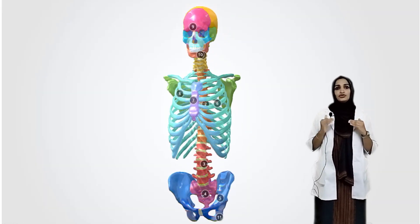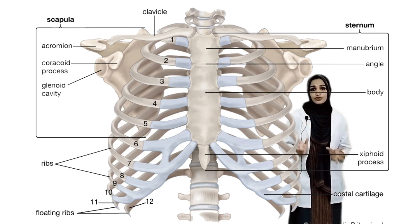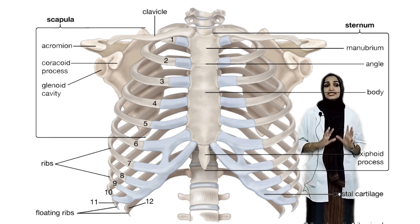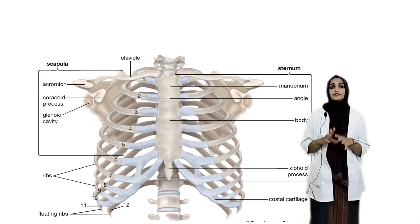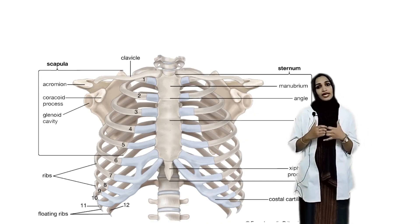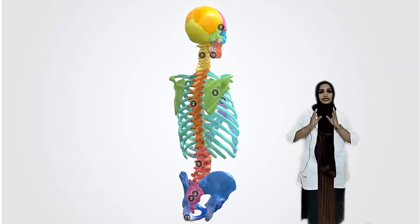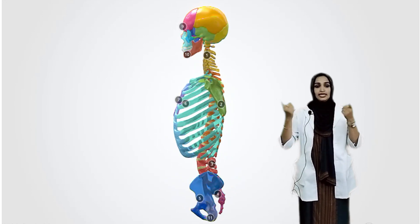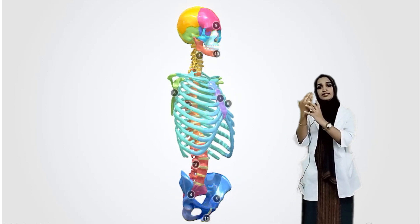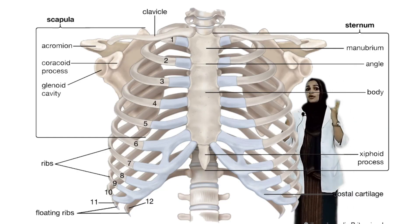Coming to the thoracic cavity. The thoracic cavity includes different types of bones. First, it consists of the sternum, also known as the breastbone. It is a single bone present at the front of the thoracic cavity. The back of the thoracic cavity is the vertebral column. The thoracic cavity also includes the ribs, which connect the sternum and the vertebral column. This is known as the rib cage.